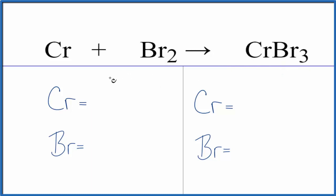Let's count the atoms up and balance the equation. We have one chromium and two bromines. On the product side, we have the one chromium and three bromines.